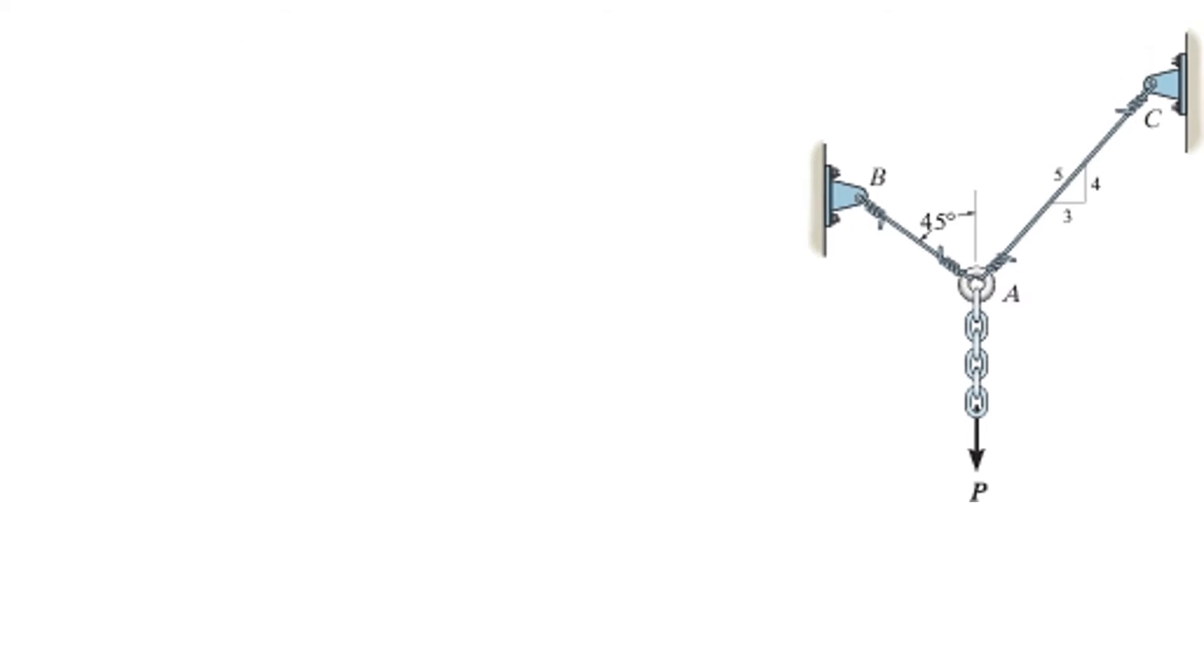Now, our second step is our free body diagram. Here I have my ring A. Here I have my force P. Here I have my tension AC with an angle 3-4-5. And here I have my tension AB with an angle 45 degrees.